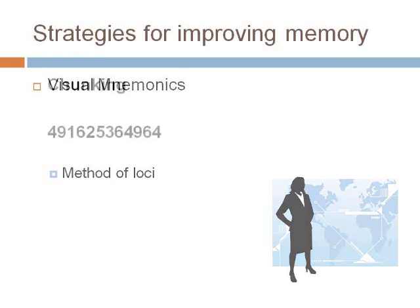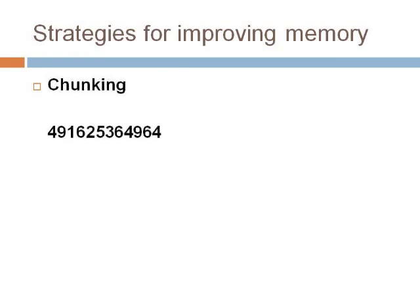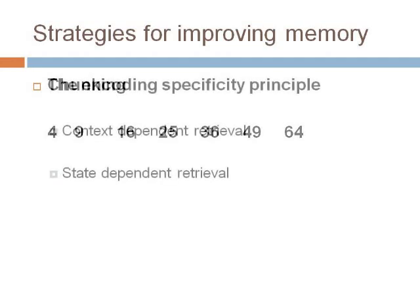A simple method of improving memory is using chunking. If you look at the list of digits on the screen, you'll see this is too much for your short-term memory to cope with. However, if we arrange the same list in chunks, we can see these are the square numbers and it becomes much easier to recall. The encoding specificity principle is the idea that items present at the time of learning will aid recall. Context-dependent retrieval is based on the principle that if you recall the information you've learnt in the same context as when you learnt it, this will aid recall by providing retrieval cues. If you have an exam, it's best to do your revision in the exam hall.